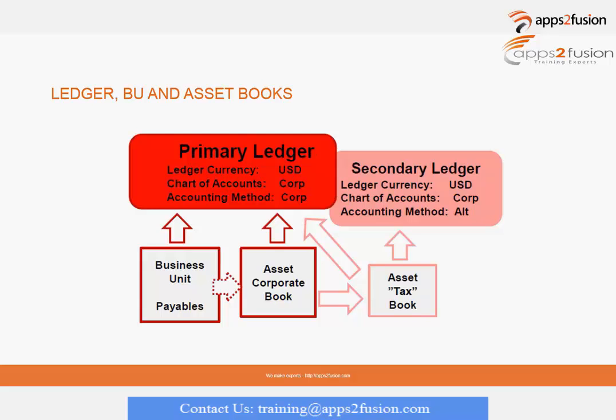The business unit, which has tables, feeds information into the asset corporate book, and the asset corporate book has to be tied with the primary ledger.